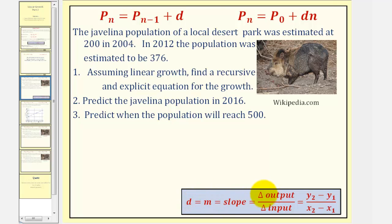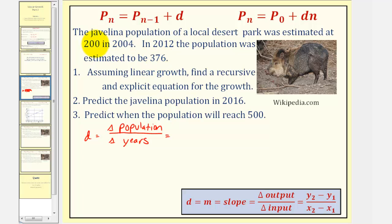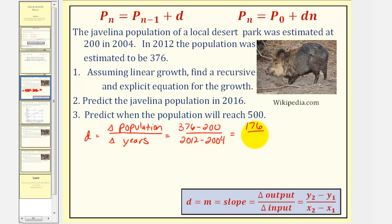Remember d is going to be equal to the change in the output — in this case, the change in the population — divided by the change in the input, which in this case would be the change in the years. The change in the population would be 376 minus 200, and the change in the years would be 2012 minus 2004. So we'd have 176 divided by 8, which is equal to 22. Because the common difference is positive, this indicates the population is increasing 22 Javelina per year, and because we're assuming linear growth, this is the constant rate of change each year.